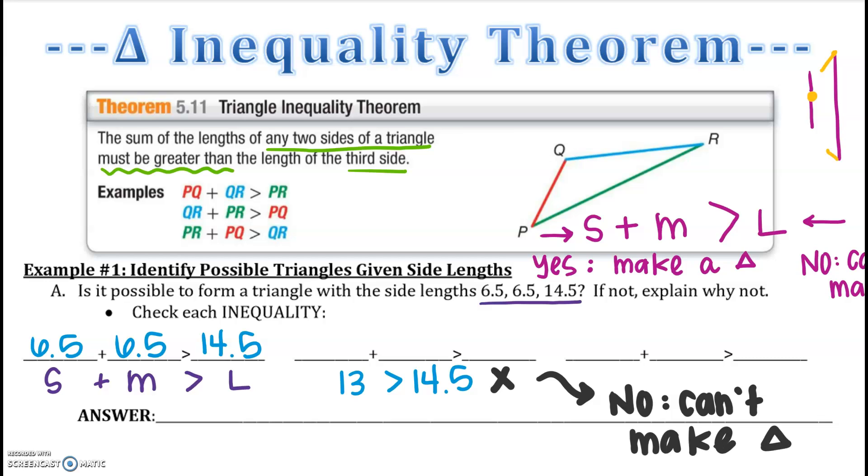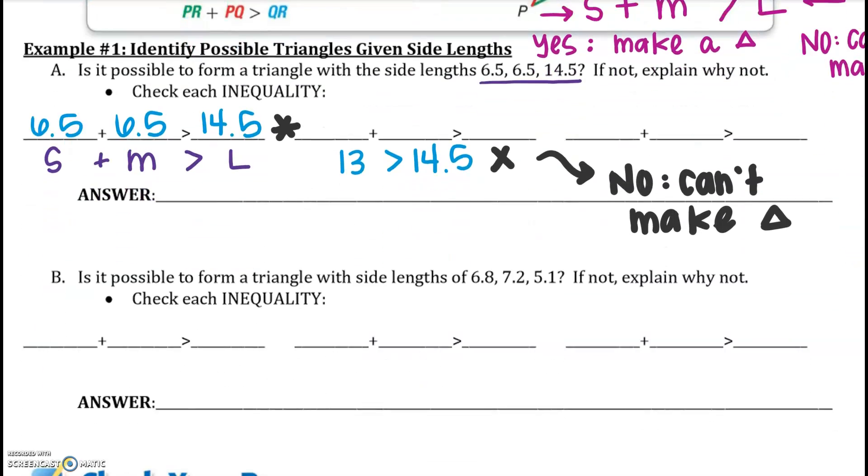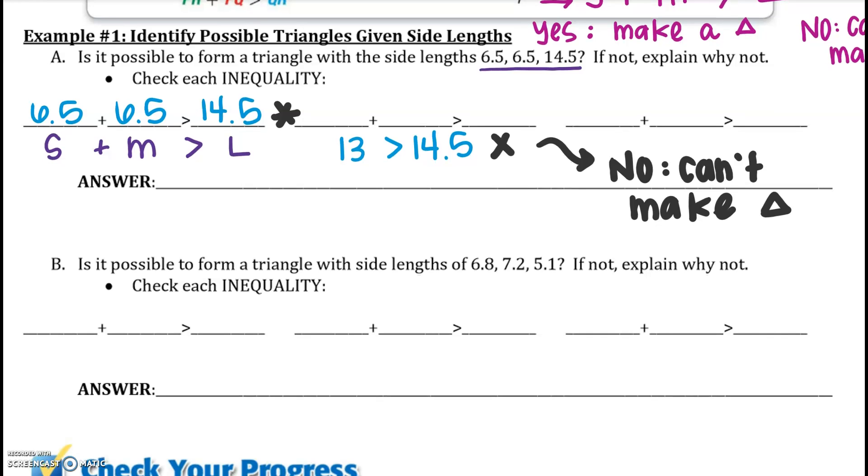You can do it all three separate ways, but if this is yes or no, then you should be good to go. Let's try another one. Remember, my small plus my medium must be greater than my longest side. So here's my small, here's my medium, and here's my longest side. So I'm going to say 5.1 plus 6.8 must be greater than my longest side. I get 12.9 is greater than 7.2, and that is a yes. So I can make a triangle.